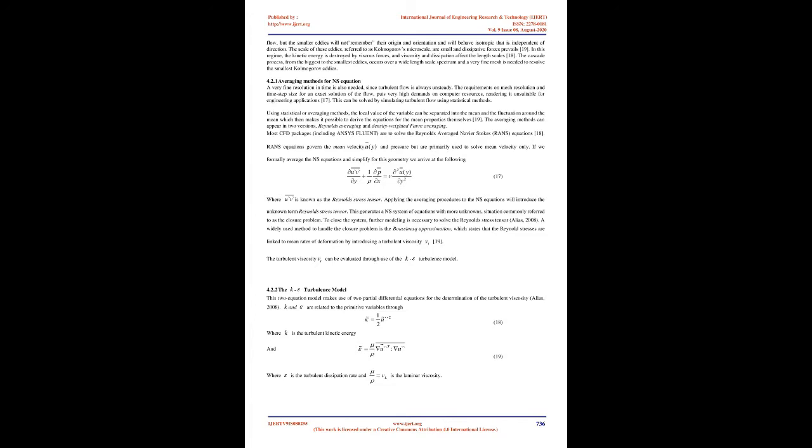This can be solved by simulating turbulent flow using statistical methods. Using statistical or averaging methods, the local value of the variable can be separated into the mean and the fluctuation around the mean, which then makes it possible to derive the equations for the mean properties themselves. The averaging methods can appear in two versions: Reynolds averaging and density-weighted Favre averaging. Most CFD packages, including ANSYS Fluent, solve the Reynolds-Averaged Navier-Stokes (RANS) equations. RANS equations govern the mean velocity and pressure but are primarily used to solve mean velocity only.